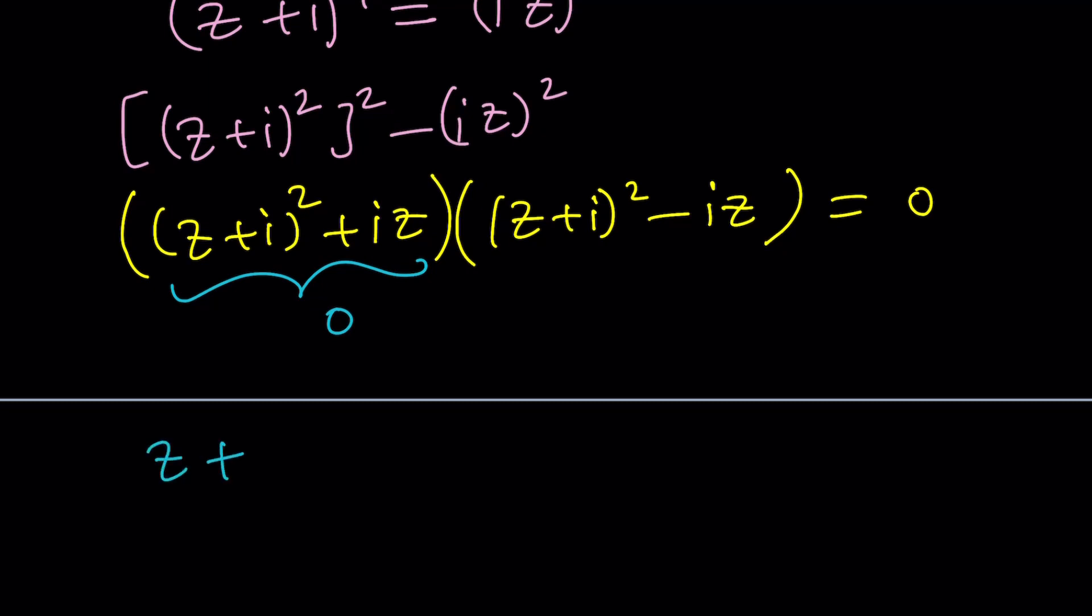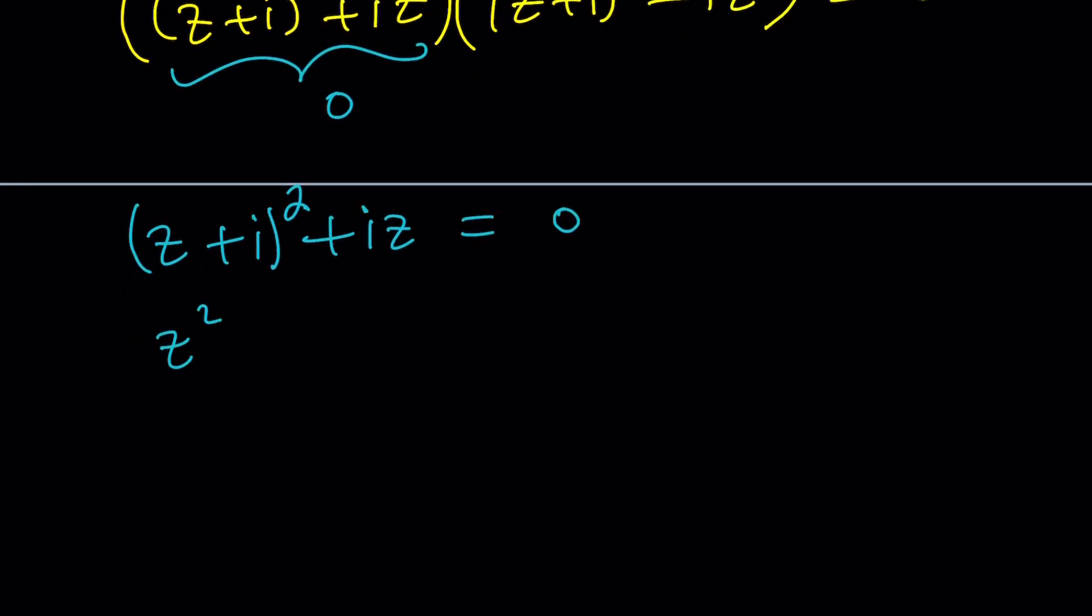This is z plus i squared squared minus iz squared. And then it can be factored as z plus i squared plus iz and z plus i squared minus iz. And guess what? These are quadratic factors which are very easy to solve. Now, if we set this equal to zero, we can factor each one or set each one equal to zero. For example, the first one, z plus i squared can be written as negative iz, or you can just expand it.